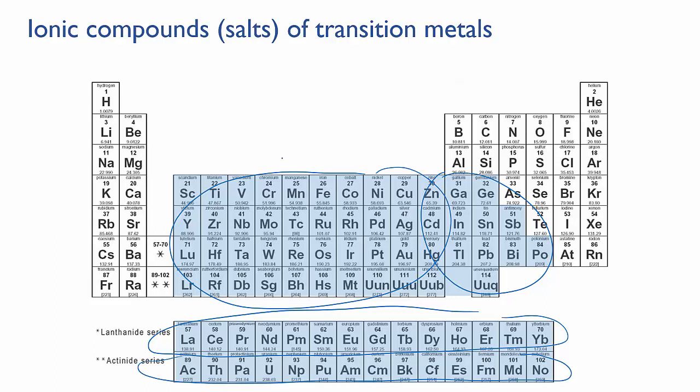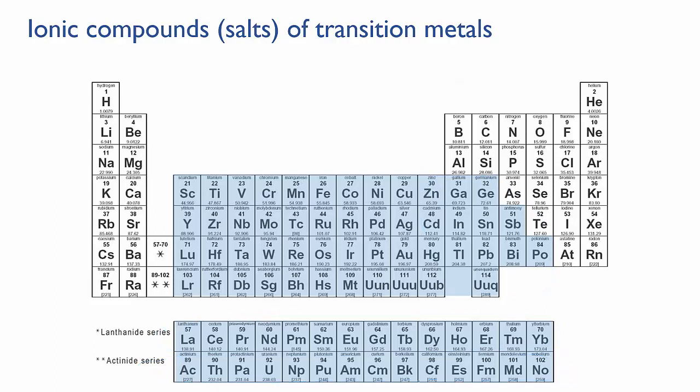Until now, it's been assumed that given a name or a formula, you would be able to work out the charges on the ions involved by just looking up where they are on the periodic table. However, most of the transition metals and post-transition metals are not so predictable. They can form ions with different charges.